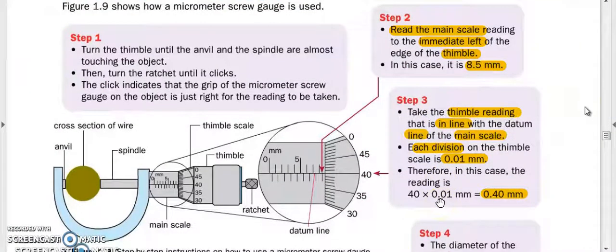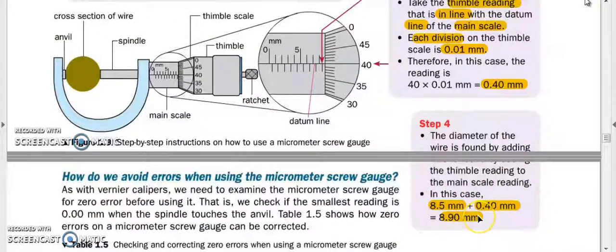The second instrument is the micrometer screw gauge. You can see the main scale reading here in millimeters. When we measure, the top readings go 1, 2, 3, 4, 5, and the bottom goes 5.5, 6, 6.5, 7, 7.5, reading 8.5 millimeters. First step: read 8.5 millimeters on the main scale. After that, look at the thimble reading that's in line with the main scale - that line is 40, or 0.40. Add both: 8.5 plus 0.40 gives 8.90 millimeters.